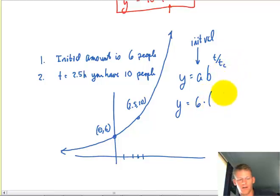And then the B value is going to be calculated. So I've got to find that. T over my time constant. My time constant is going to be 2.5 hours.